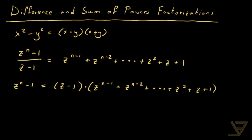You might be wondering what if z equals 1, because then we're dividing by 0. But this identity still holds in that case, because if z equals 1 then it just says that 0 equals 0. So the identity still holds for all complex numbers z.